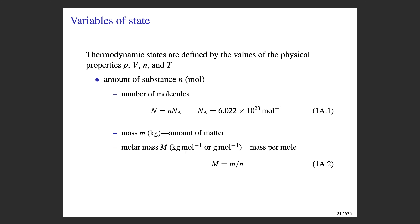The SI units of molar mass are kilograms per mole, but more commonly we use grams per mole. Molar mass is defined as the mass of a sample divided by the number of moles: M = m/n. You can rearrange this equation depending on whether you want to calculate the mass or the number of moles given the other.